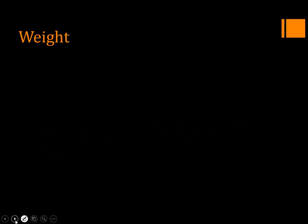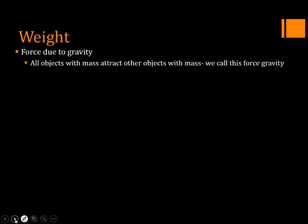Weight is the force due to gravity. The more massive an object is, the greater its gravitational pull. However, it's also affected by distance. The farther you are from something, the weaker its gravity, which is why we're really close to Earth and can feel its gravitational pull. Even though the Sun is much more massive than Earth, it's far away so we don't feel its gravitational pull. All objects with mass attract other objects with mass — that's the force we call gravity.